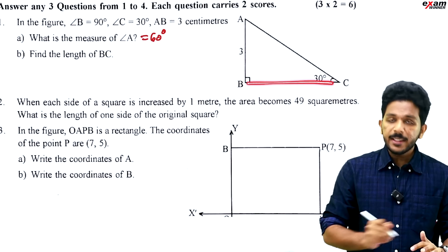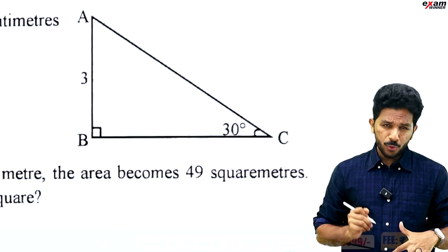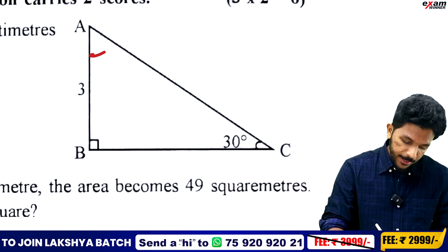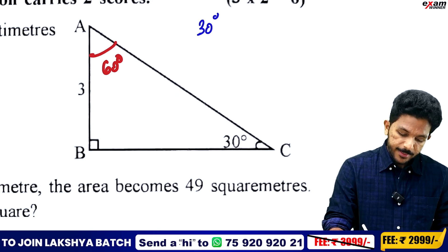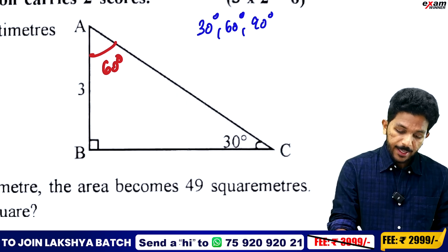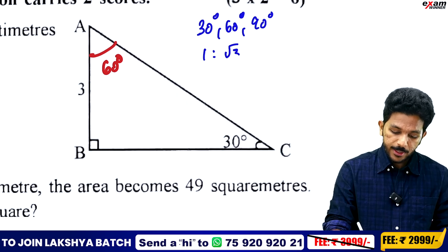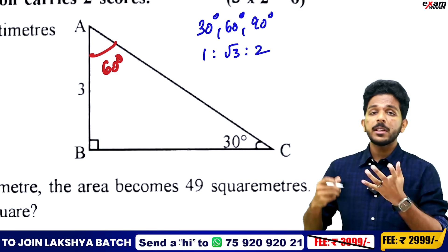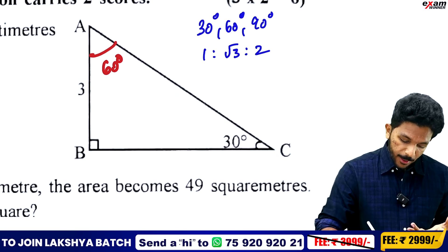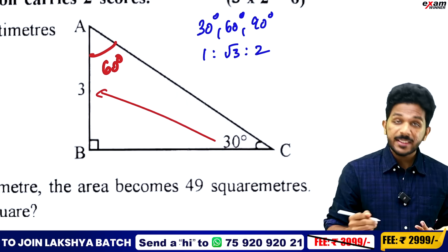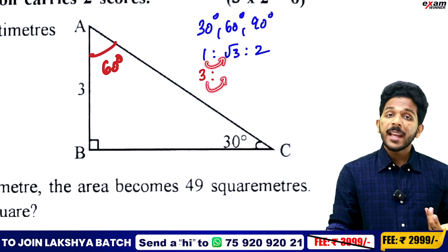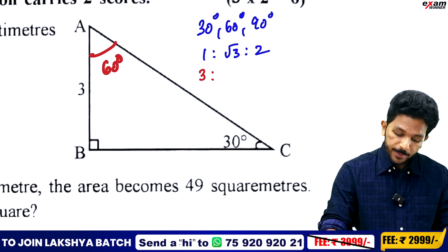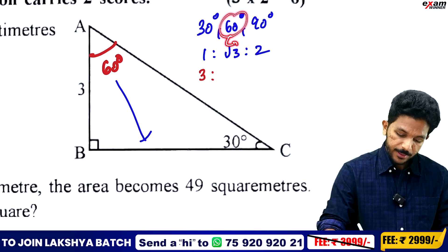Find the length of BC. We zoom into the triangle and use the 30-60-90 ratio. The ratio for a 30-60-90 triangle is 1 : √3 : 2. The side opposite 30° is 1, and opposite 60° is √3. Since the given side is 3, then BC equals 3√3.